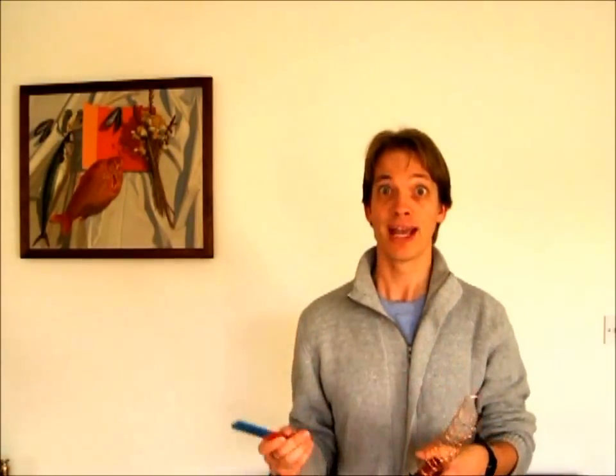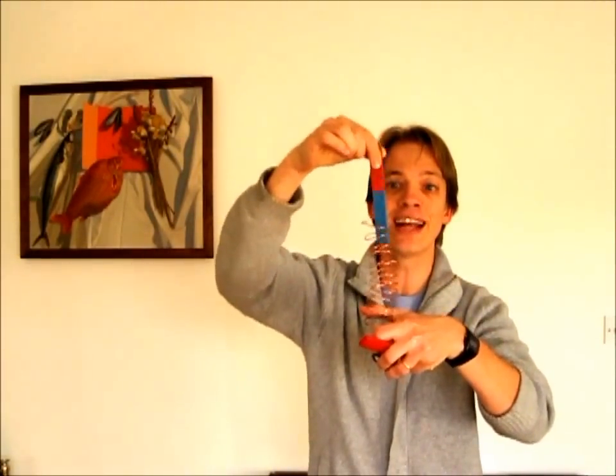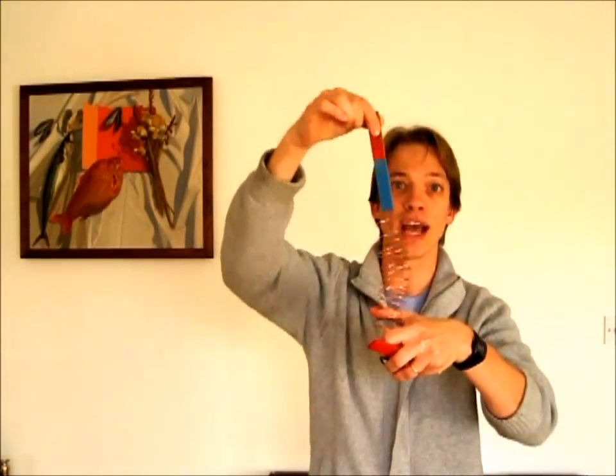This is about generating electricity, and we can do that in two ways. We need a magnet and a coil of wire. Here's the first way: I take my magnet and I put it inside the coil of wire and I move it in and out, and that will induce a current in the coil of wire.